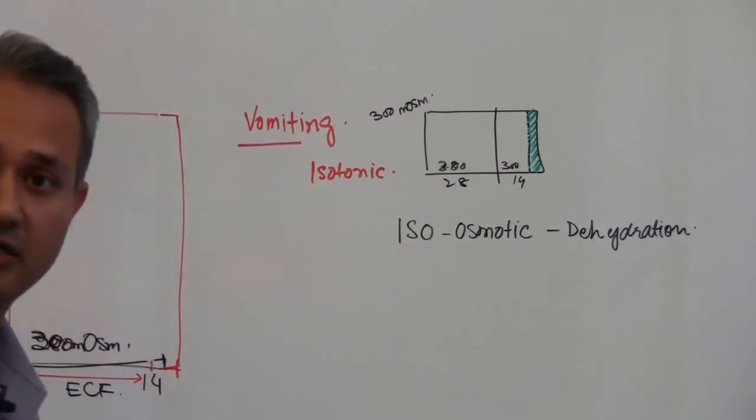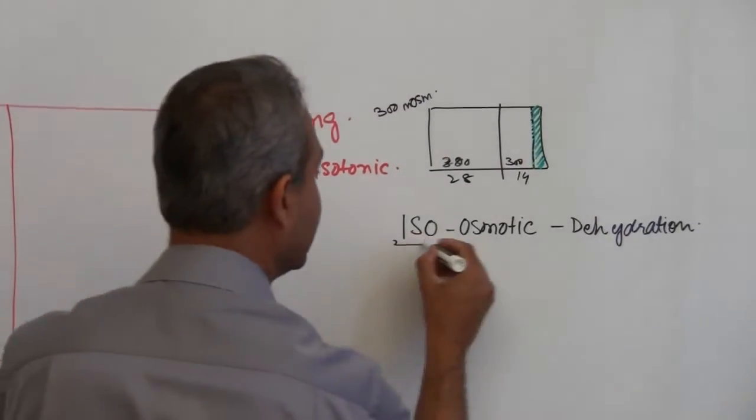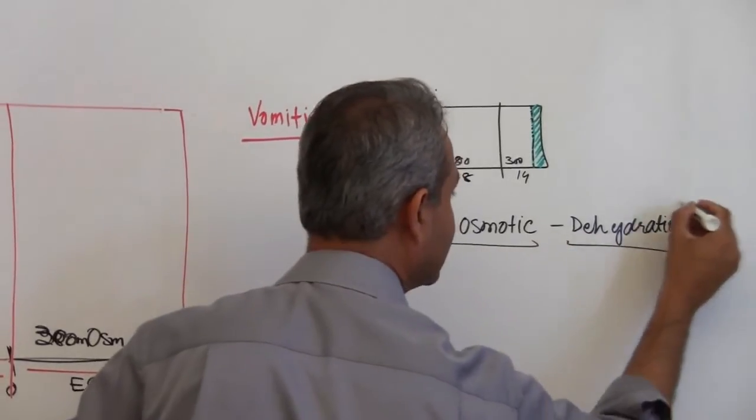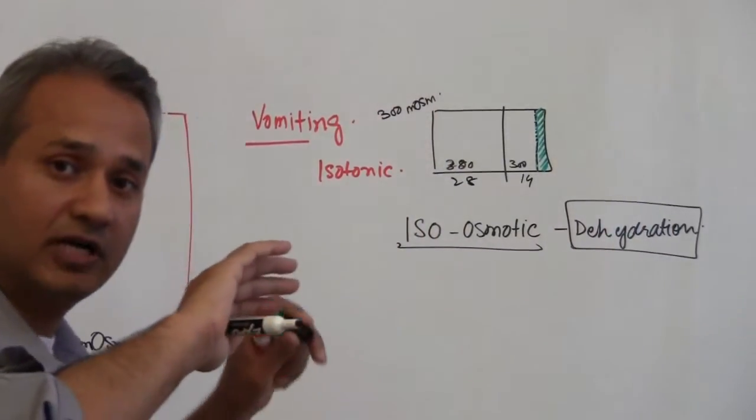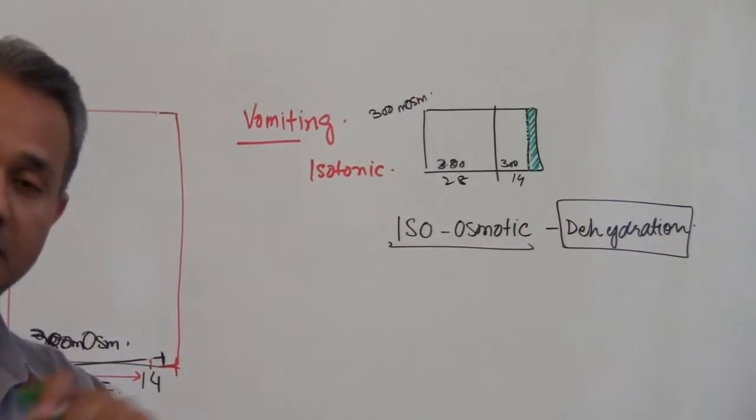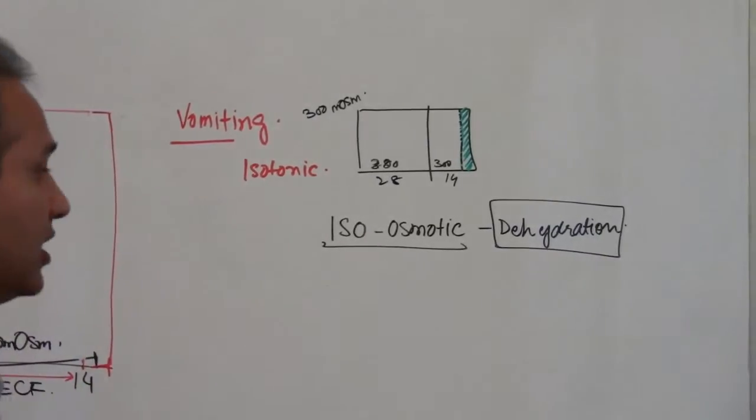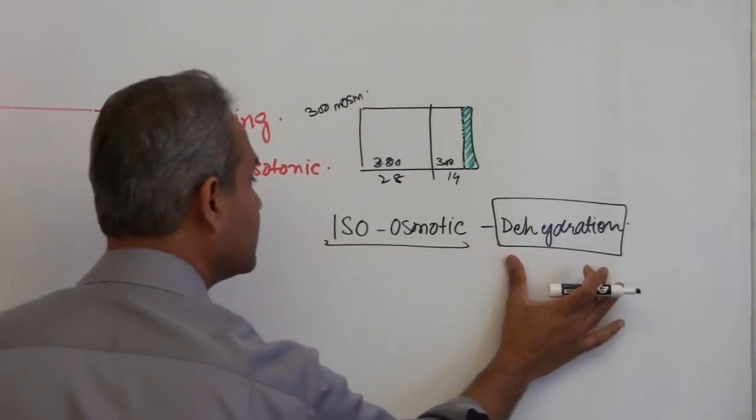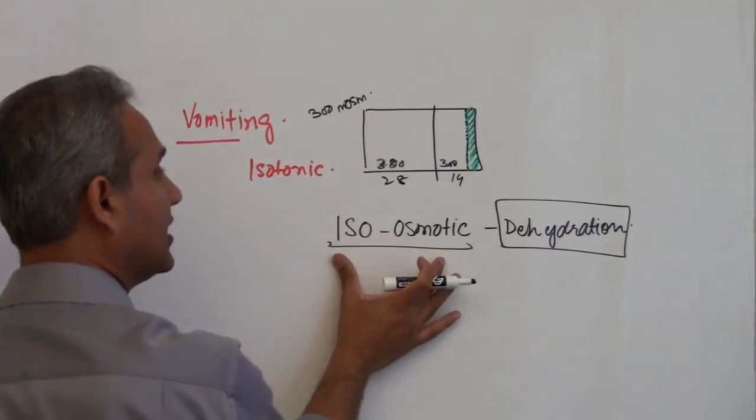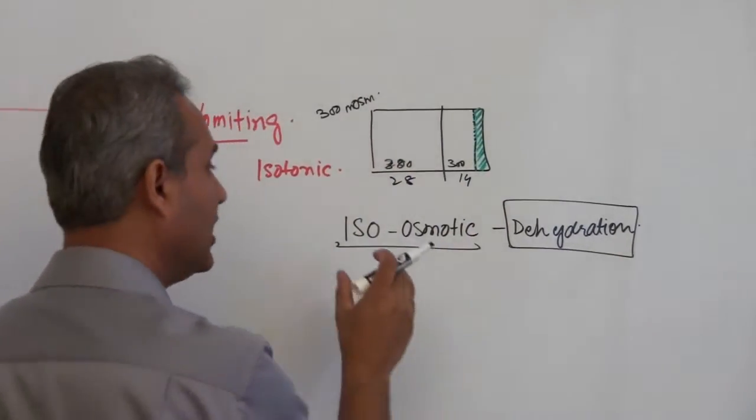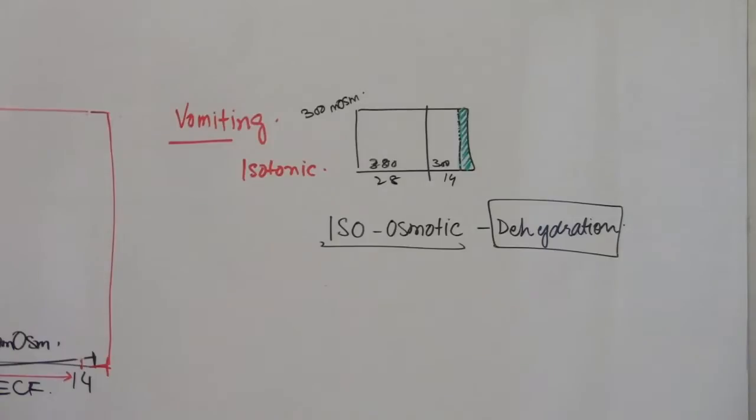Dehydration, right. Isoosmotic - that whatever we dehydrated, whatever fluid went out. Dehydration means fluid reduced. The fluid which is reduced had the same osmolarity as the remaining body, so we have isoosmotic dehydration.